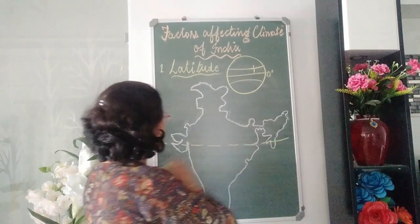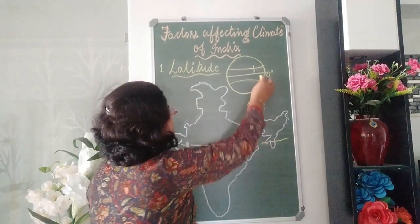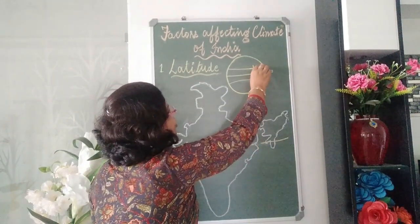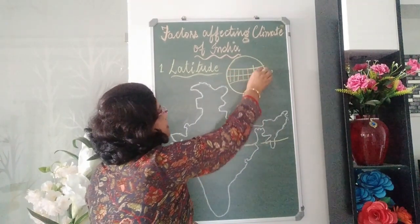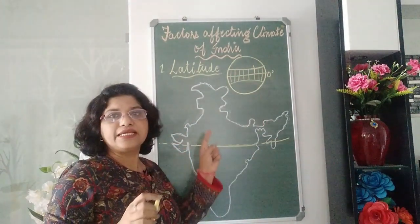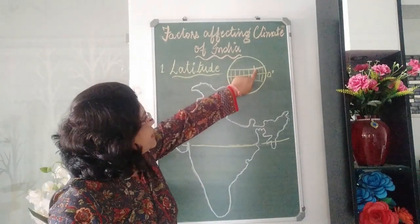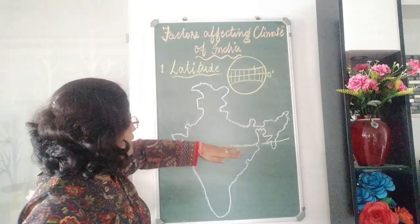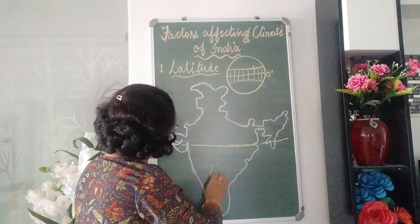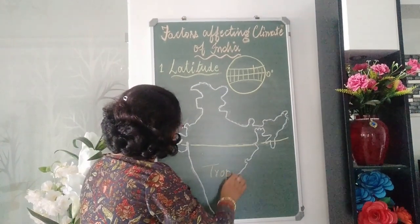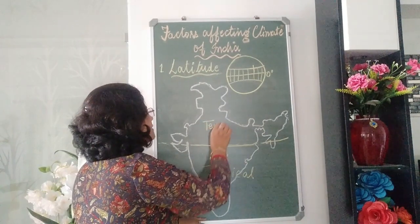What does this mean? This means that below the Tropic of Cancer, till the equator, we have a torrid zone. This is the hottest area on the globe because the sun's rays fall directly. This means that the southern part of India, south of the Tropic of Cancer, has a tropical climate — this is called the tropical zone. The area above the Tropic of Cancer has a temperate or subtropical climate.